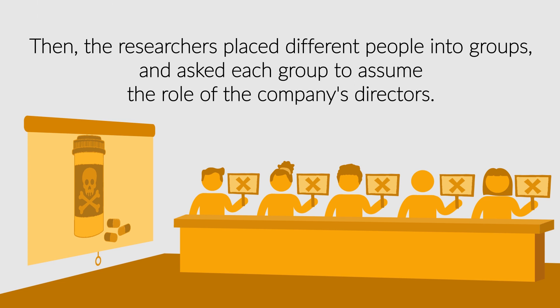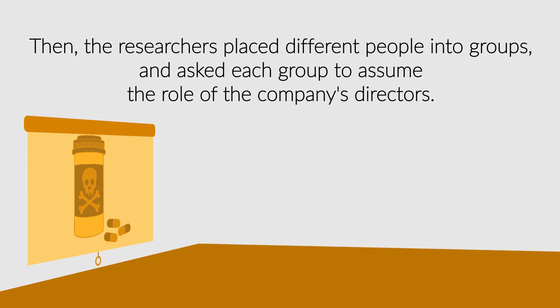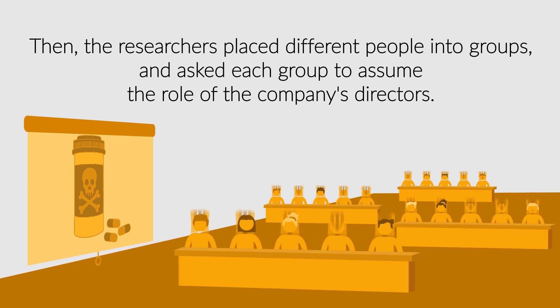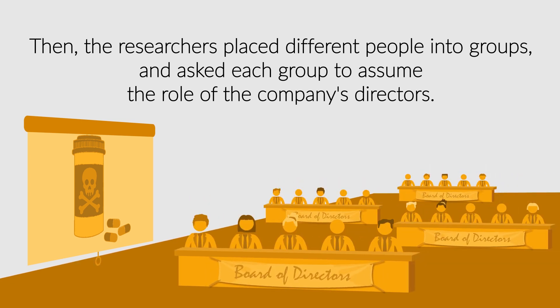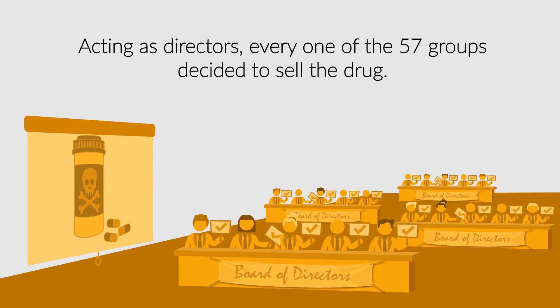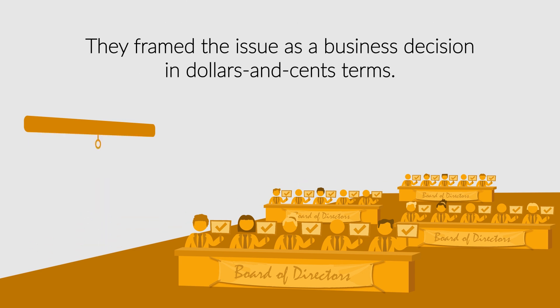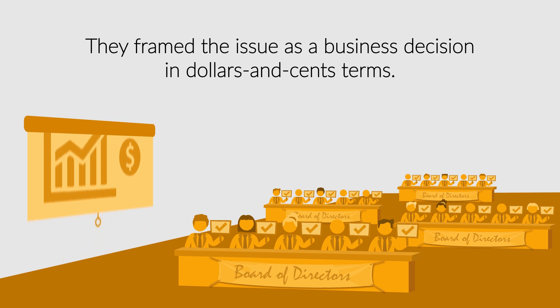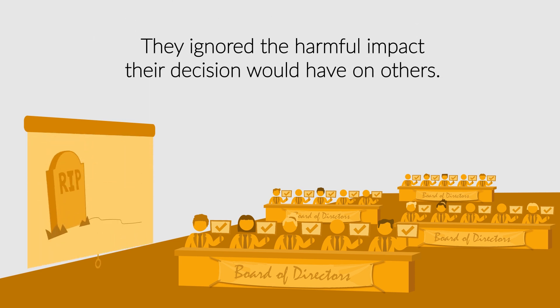Then, the researchers placed different people into groups and asked each group to assume the role of the company's directors. Acting as directors, every one of the 57 groups decided to sell the drug. They framed the issue as a business decision in dollars and cents terms, and ignored the harmful impact their decision would have on others.